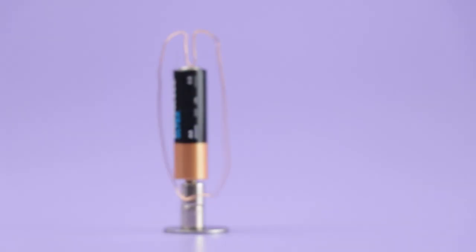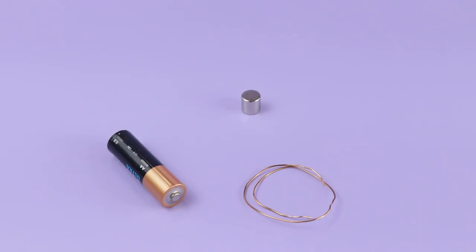Let us start with a very interesting activity to see the relationship between electricity and magnetism in action. For that we have a simple toy called a valve motor. To make a valve motor, we need neodymium magnets, a bare copper wire, and a 1.5 volt battery.